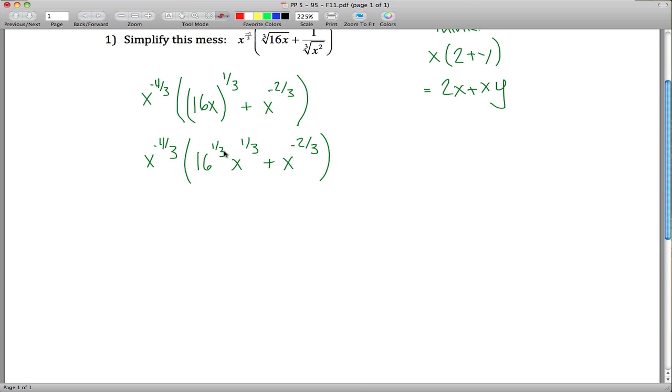If we do 16 to the 1 third x to the 1 third times this guy, we can write that as 16 to the 1 third x to the 1 third x to the negative 4 thirds. And then again, we have to take this and multiply it by this guy, so x to the negative 4 thirds x to the negative 2 thirds. In this form that it's currently written in, we can use one of our rules. We have the same base right here.